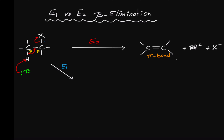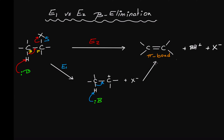For the E1 mechanism, the reaction happens in two steps, similar to SN1. The first step is the formation of the carbocation — the halogen leaves, giving us a carbocation plus X minus. In the presence of a base, the base then takes the beta hydrogen, and the electrons forming that bond are shared between the two carbons to form the pi bond.